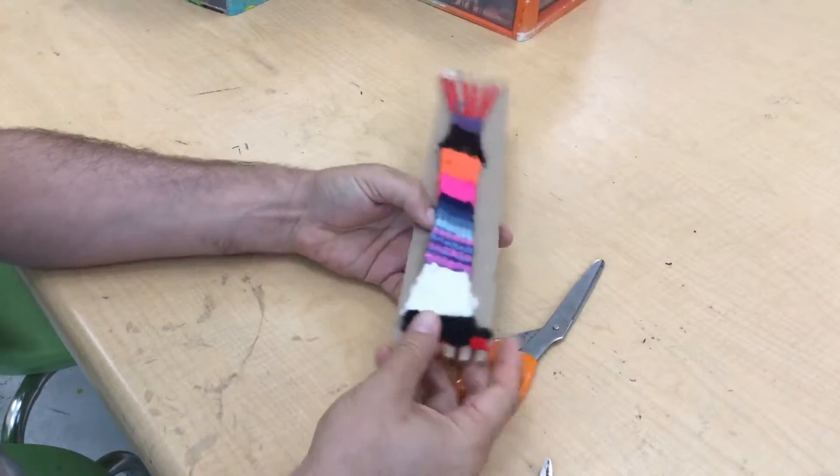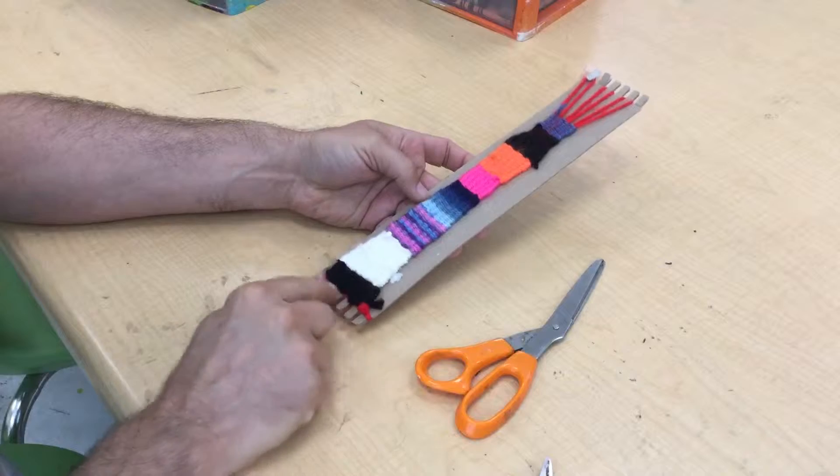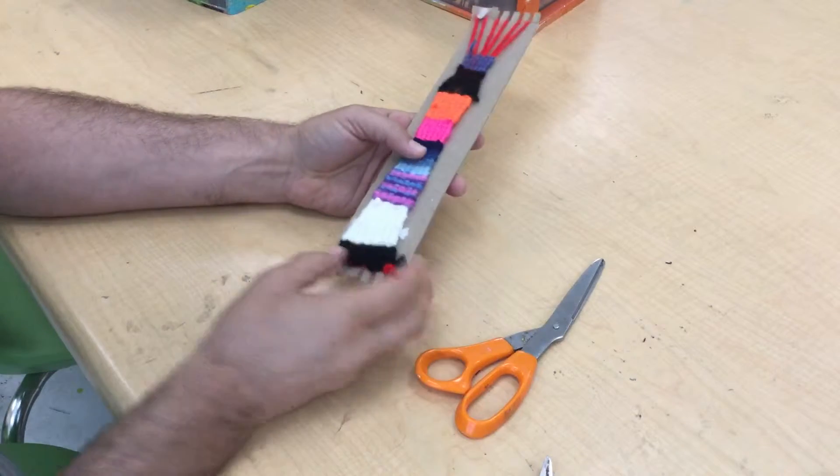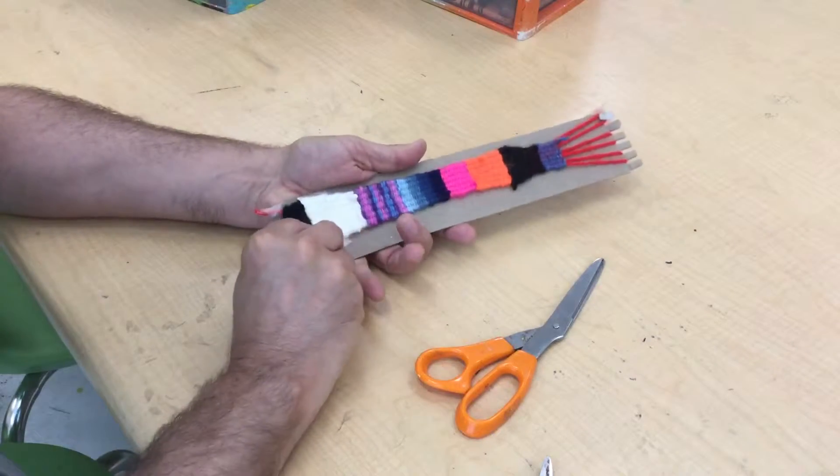All right, so I'm going to show you now how to take it off the loom. So a lot of you don't have any space right here at the bottom, so what I would do depends on if you want a fringe or not, or if you're going to make it into a bracelet.